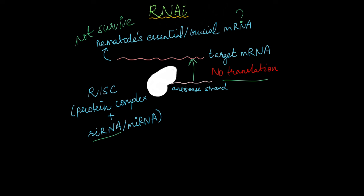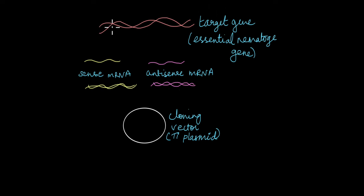So the first challenge for scientists was to figure out this target mRNA, this target gene that was crucial for the nematode survival. Once that was done, there was another problem. They have identified the target gene, the essential nematode gene, fine. But for RNA interference to be kicked off, it needs a double-stranded RNA molecule so that this double-stranded RNA can be recognized by Dicer and can be chopped into smaller bits of siRNA.